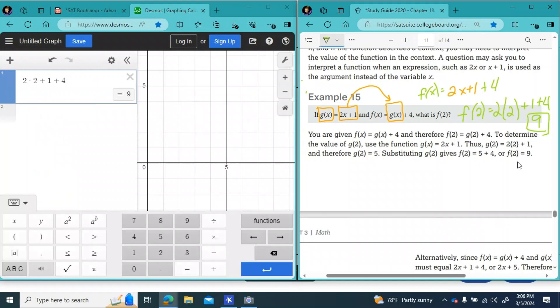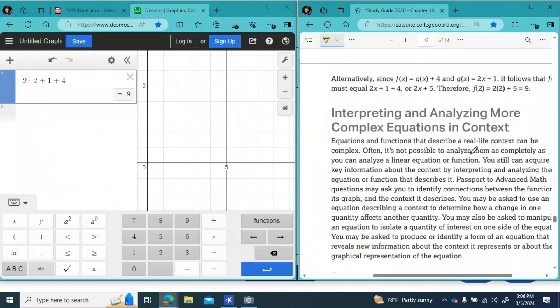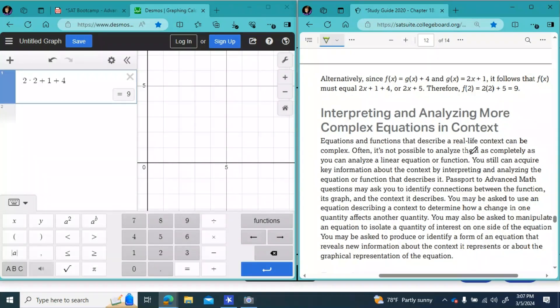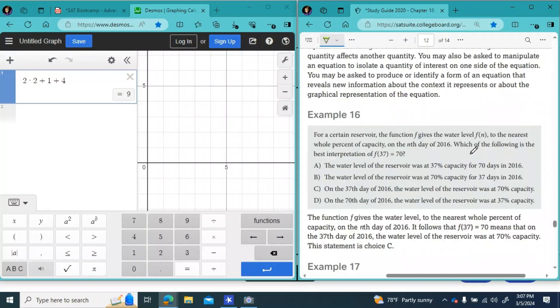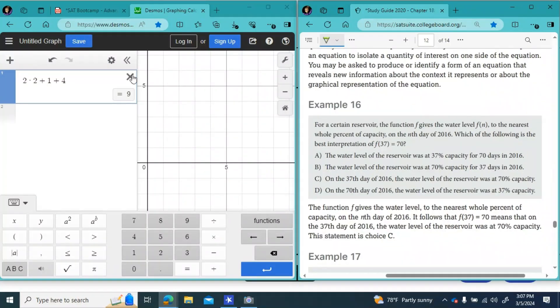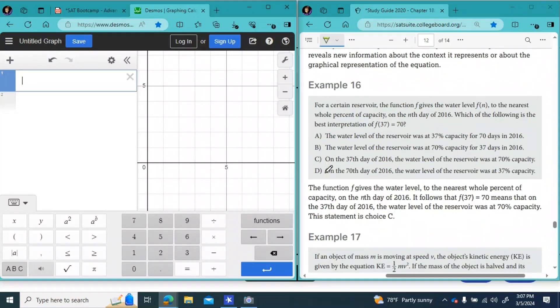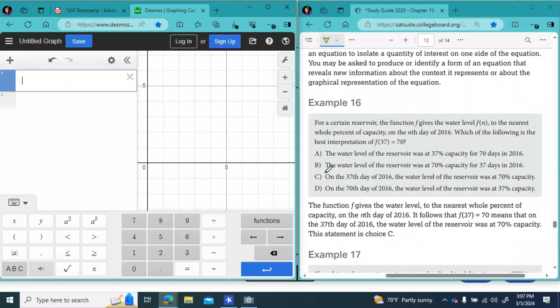And we only have one more topic left in the subcategories for the advanced topics in math. So I'm going to keep going here. This is really where our advanced math becomes advanced math. These are the more complex questions, interpreting and analyzing more complex equations in context. So it's word problems. You got to read the story and find out what's going on. Example number 16 says for a certain reservoir, the function F gives the water level F of N to the nearest whole percent of capacity on the Nth day of 2016, which of the following is the best interpretation of F of 37 equals 70.